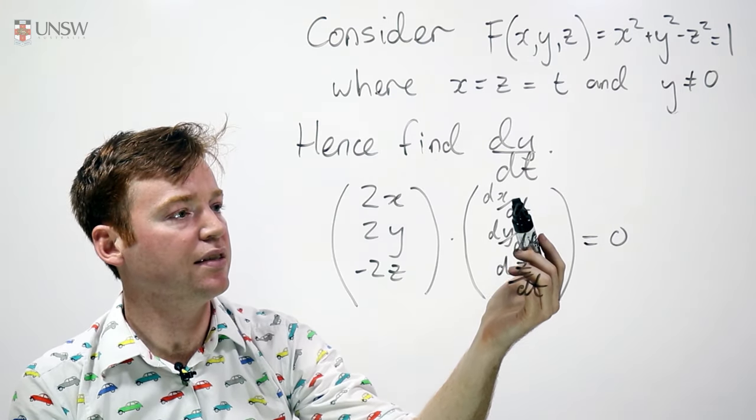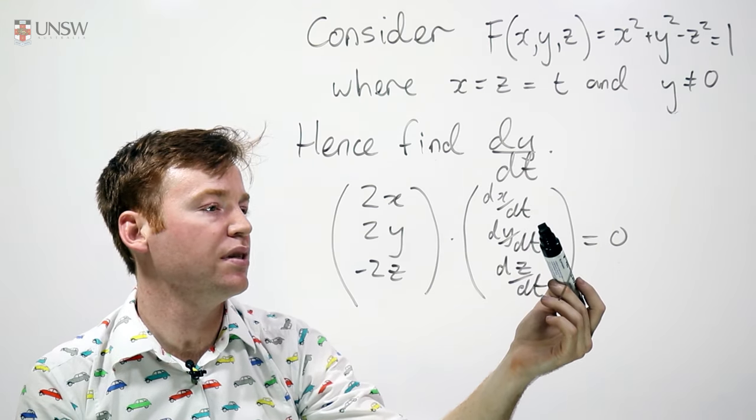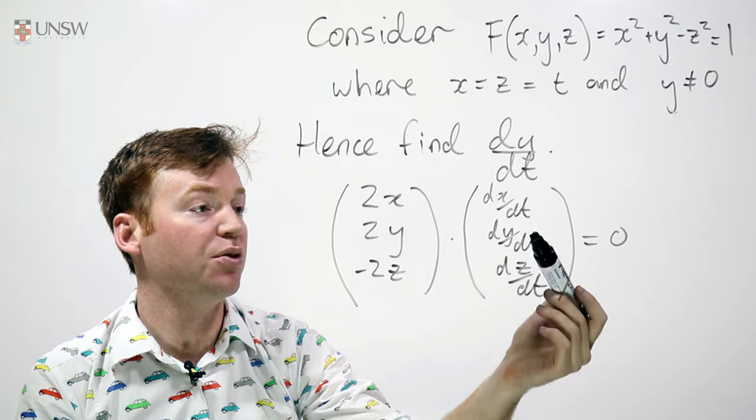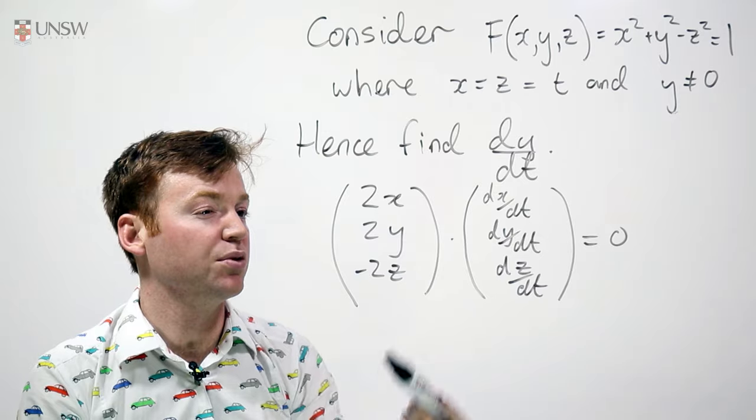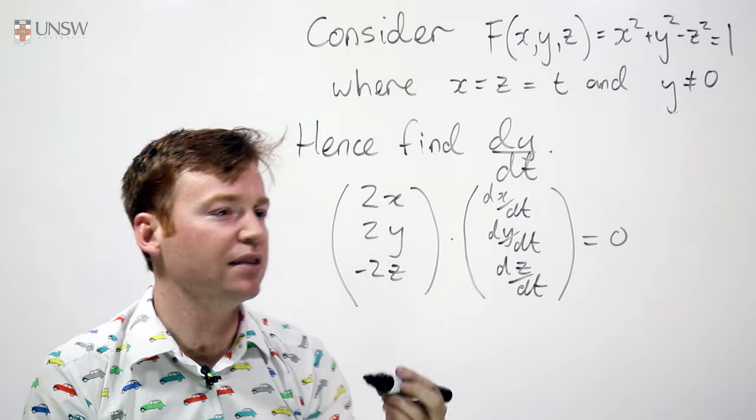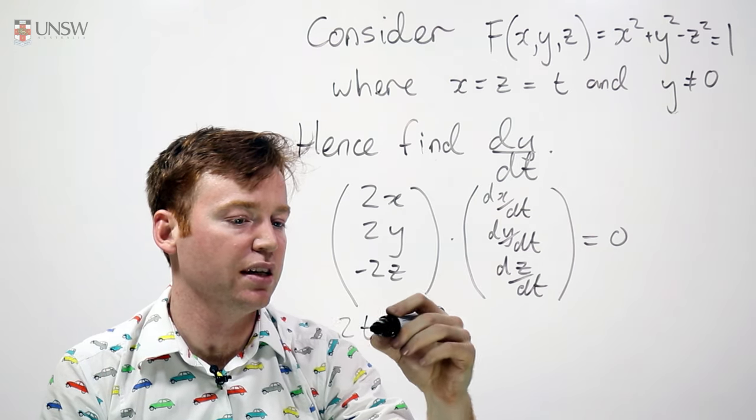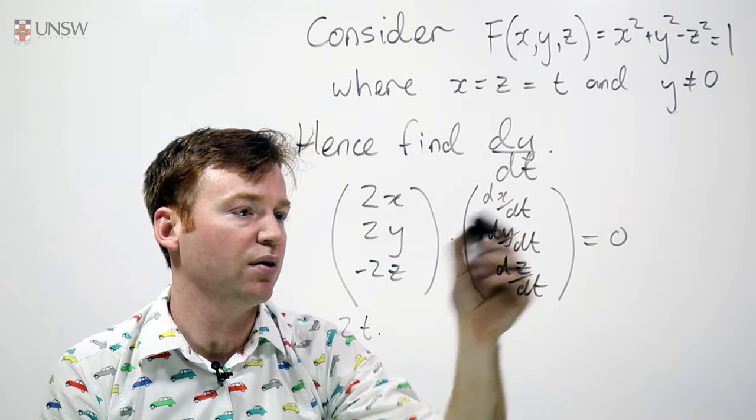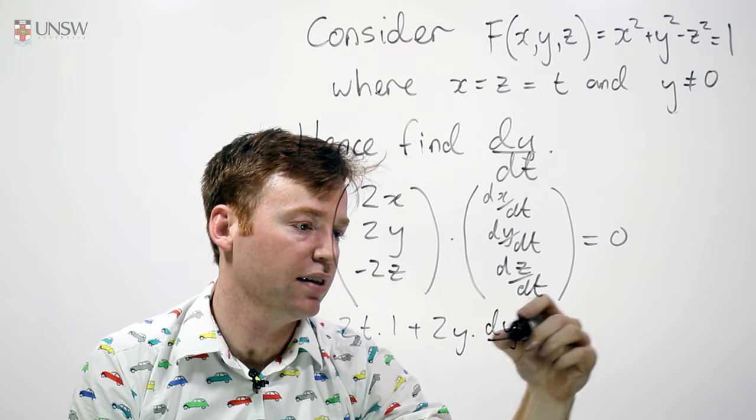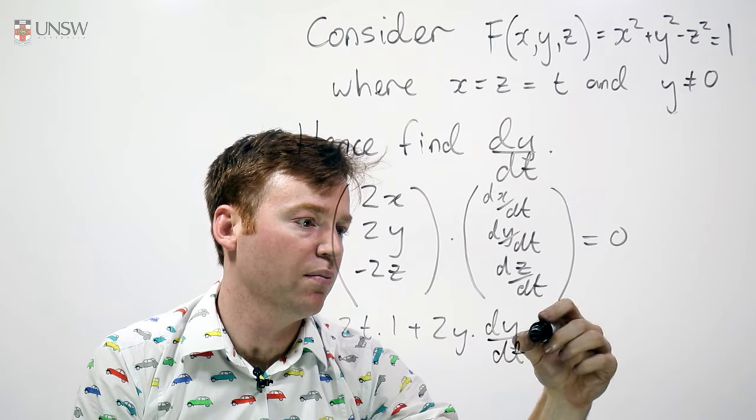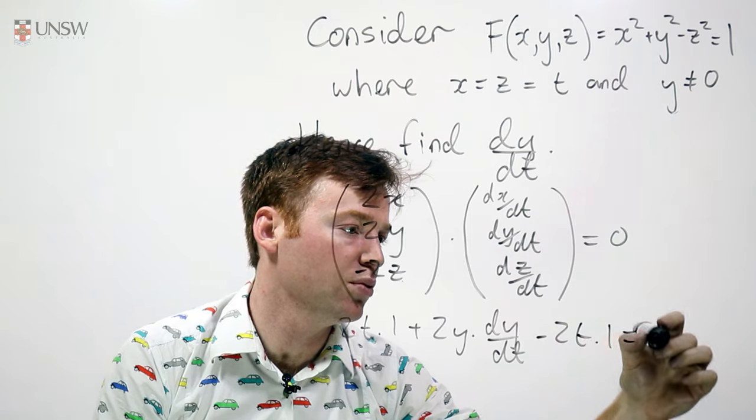Now I know that this is equal to 1. I know this is equal to 1. I don't know what this is but I know this is equal to t and I know this is equal to t. Maybe I don't know what y is but let's see how far we can go. So I can dot product these two things. I get 2t times 1 plus 2y times dy/dt minus 2t times 1 is equal to 0.